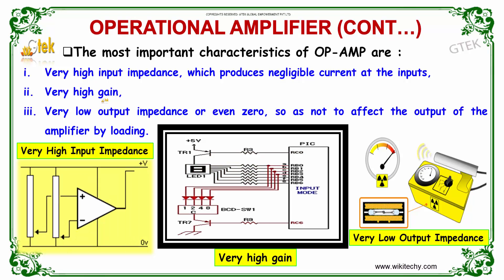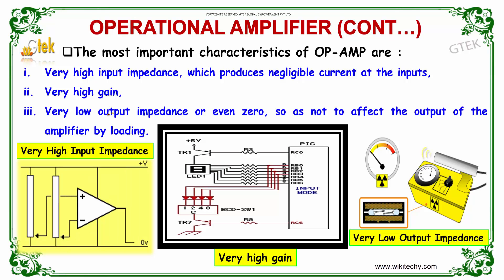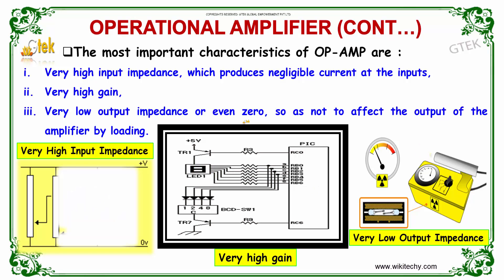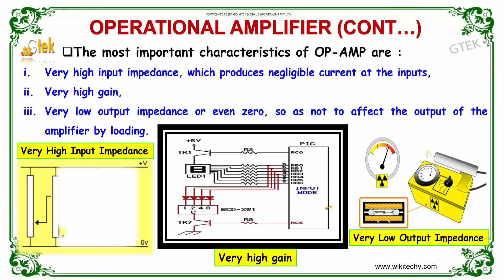The next important characteristic is that it has a very high gain. And it has a very low output impedance — or even zero — so as not to affect the output of the amplifier by loading. These are some of the characteristics of the operational amplifier.